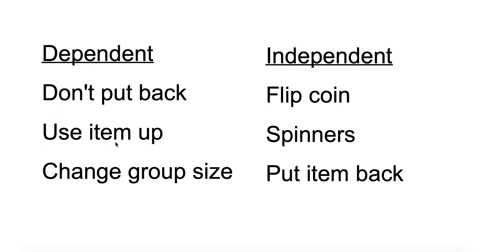If the item gets used up, such as once they picked the topic it was used up, it was off the list, or if the change of group size happens. So if there's a smaller amount than originally, then that's going to show a dependent.